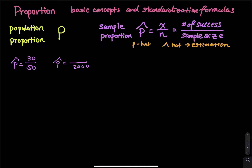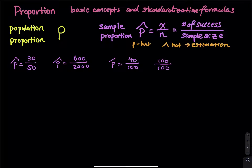If I have 100 people in the classroom and 40 of them drink coffee every day, then the sample proportion is 40 out of 100. The maximum you can go is 100 divided by 100, and the minimum you can go is 0 divided by 100, which means nobody drinks coffee in that class.